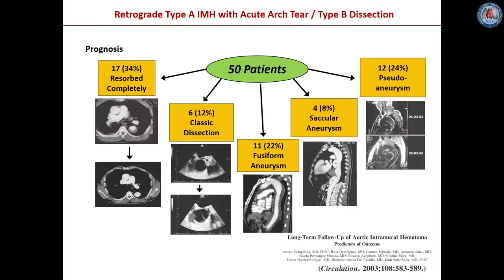This is a historical report from Circulation in 2003 in which different types of evolution of intramural hematoma were described. Patients may present a completely resorbed hematoma in up to one third of cases. Ten percent can evolve with classic separation of the true and false lumen. Twenty-two percent of these patients may present a fusiform aneurysm evolution. Eight percent may develop a saccular aneurysm, and one fourth of these patients may also develop a pseudoaneurysm at the location of the previous intramural hematoma.